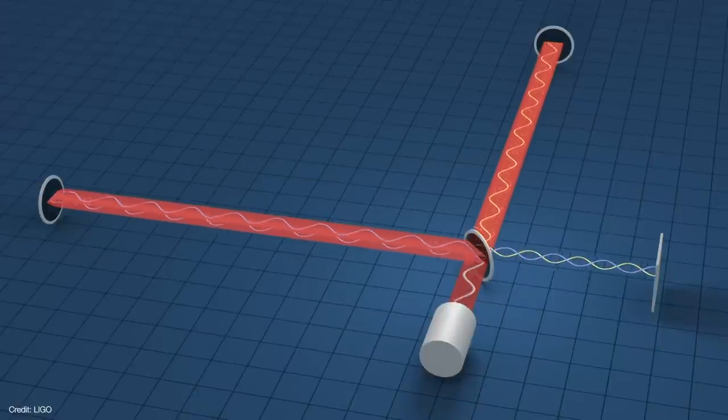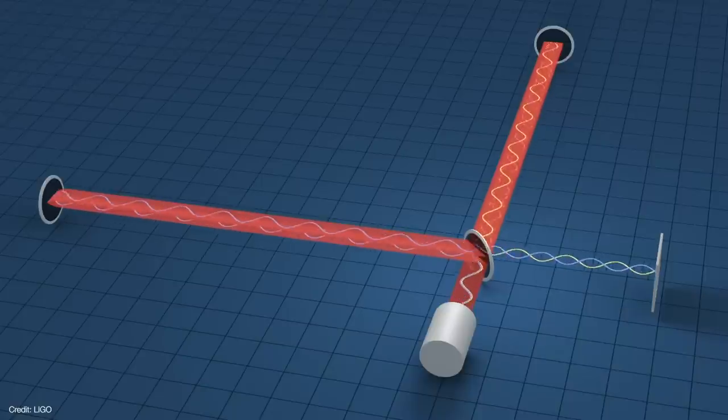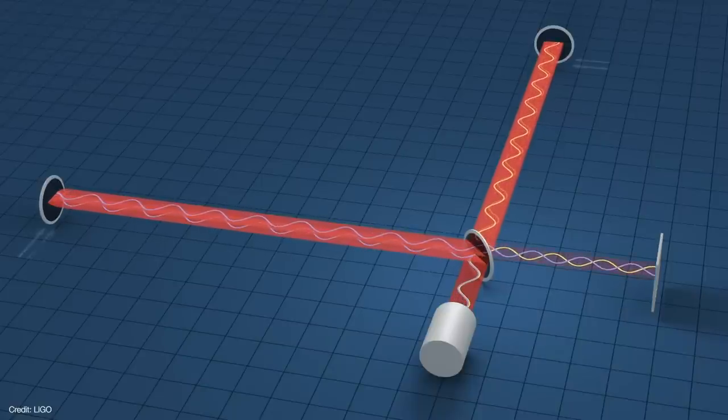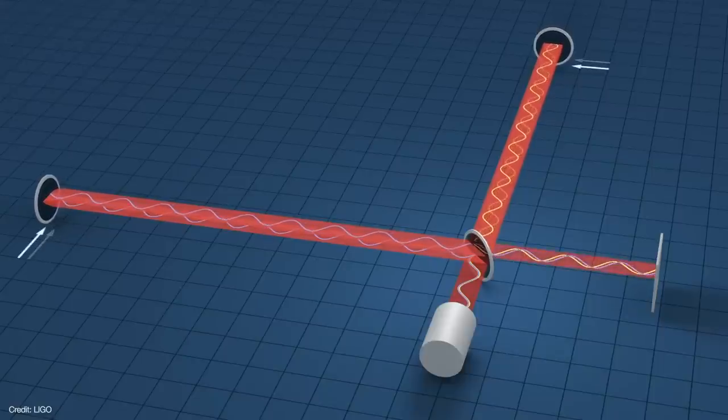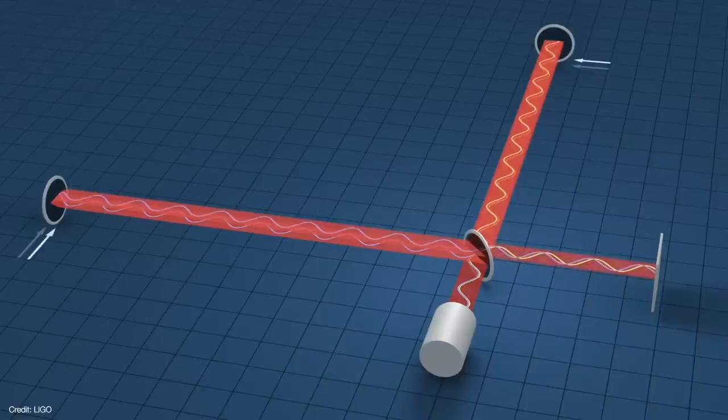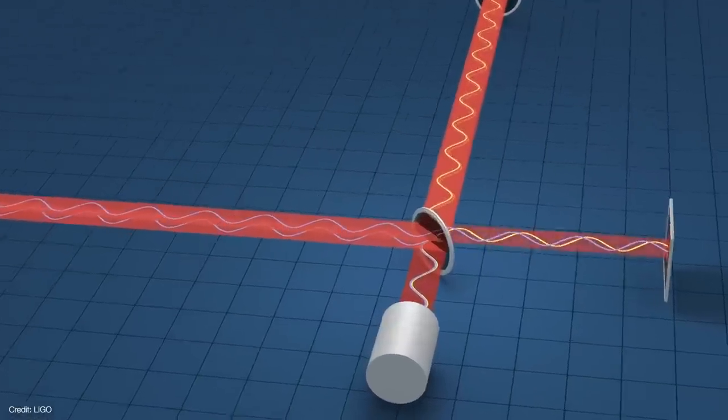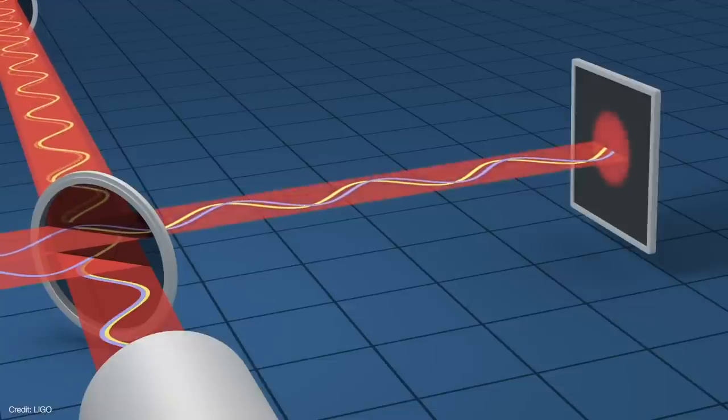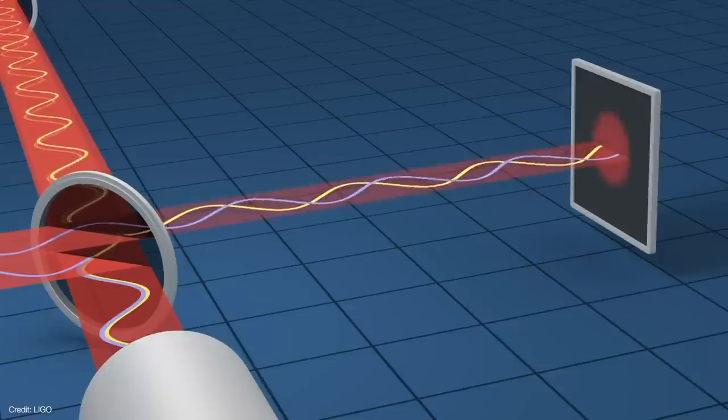The mirrors are set such that the two waves cancel each other out when they recombine so no light is registered by the detector. But when a gravitational wave passes through the observatory, the spacetime between the mirrors and the splitter are alternately stretched and compressed. These waves interfere with each other, producing a flicker of light that the detector registers.